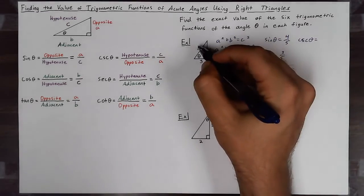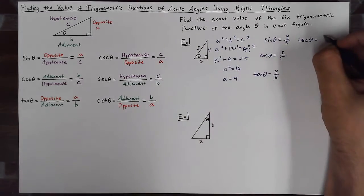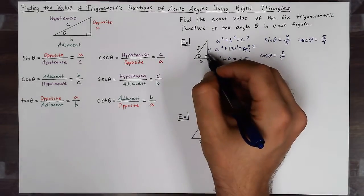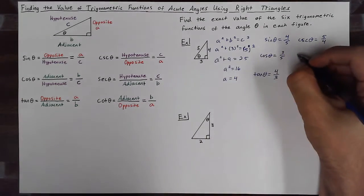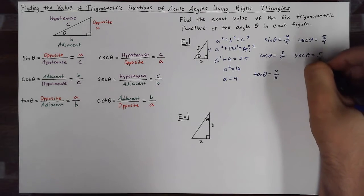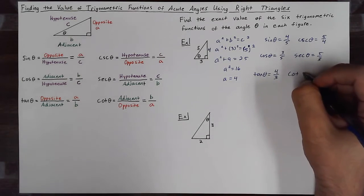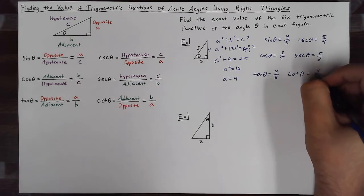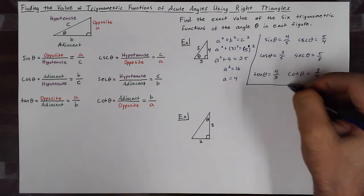Cosecant of theta will be hypotenuse over opposite, giving me five over four. Secant will be hypotenuse over adjacent, which is five over three. And cotangent of theta will be adjacent over opposite, which will give me three over four. So those are the values of the six trig functions.